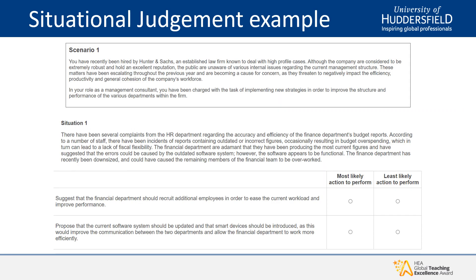Here is an example of a situational judgment question. A work-based scenario is provided for context, followed by a unique situation within that scenario. You're then given a choice to identify which of the following actions you're most likely to perform and which you're least likely to perform, using the information provided to assess the best decision in that scenario.